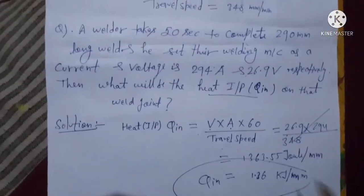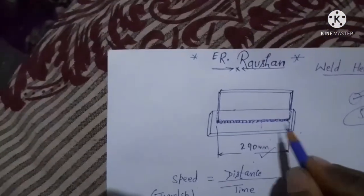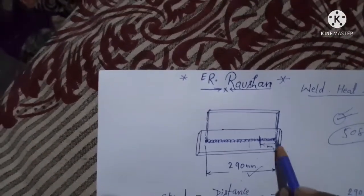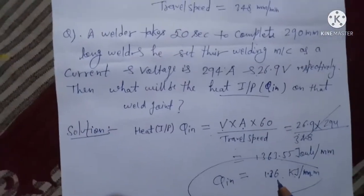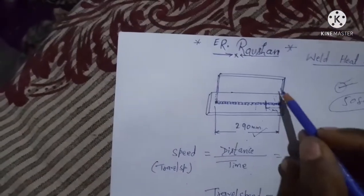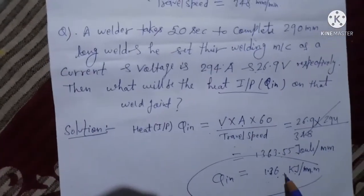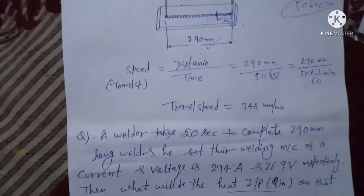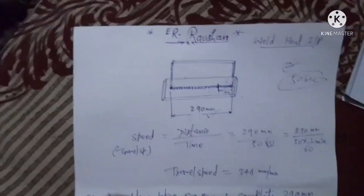So the heat input is 1.36 kilojoule per mm. That means in 1 mm of weld, the heat required to weld this joint is 1.36 kilojoule. If you want to join these two parts, you require a minimum of 1.36 kilojoule of heat per mm to weld them together. This is the practical formula to calculate your welding heat input anywhere. Thank you friends, enjoy this.